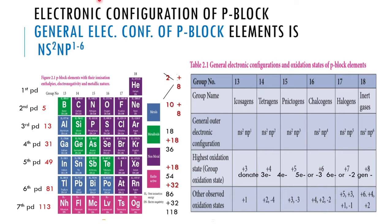The general electronic configuration of P block elements is ns² np¹⁻⁶, where n represents the period number. The superscript 1 to 6 represents the position of the element within the P block — which place it occupies in the second period, third period, and so on.